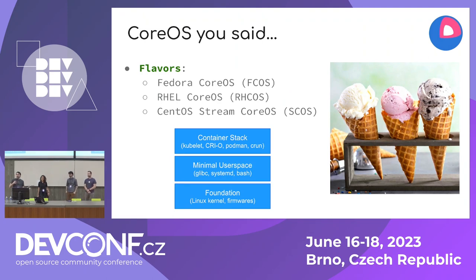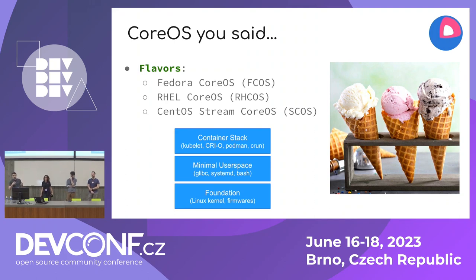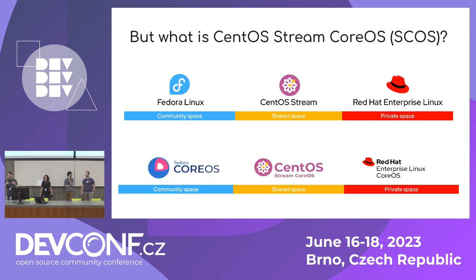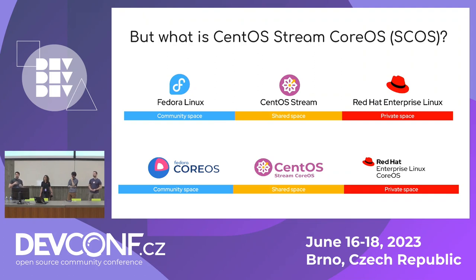Where does Fedora CoreOS and Red Hat CoreOS edition fit in this picture? So far we had only two: Fedora CoreOS, which is based on Fedora, and RHEL CoreOS, which is based on RHEL and is part of OpenShift. We are now introducing a third one: CentOS Stream CoreOS — the version in the middle. It keeps the idea of a minimal operating system with just what's needed: the container stack, what's needed for Kubernetes, built on top of CentOS Stream. The ecosystem now looks like Fedora CoreOS on top of Fedora, CentOS Stream CoreOS on top of CentOS Stream, and RHEL CoreOS for OpenShift.